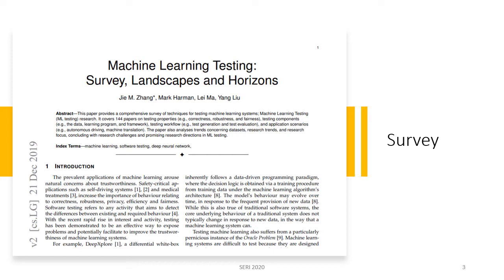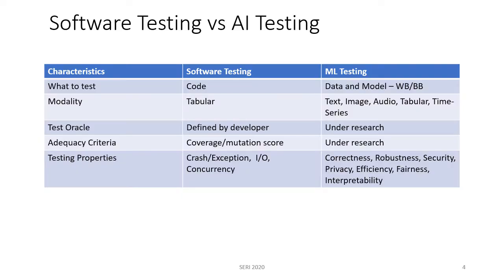Today I'm going to talk about mostly the work which is done in IBM Research, though only a part of it occurs in the survey. Let's start with the difference between software testing and AI testing, because this difference actually motivated us to do research in AI testing.